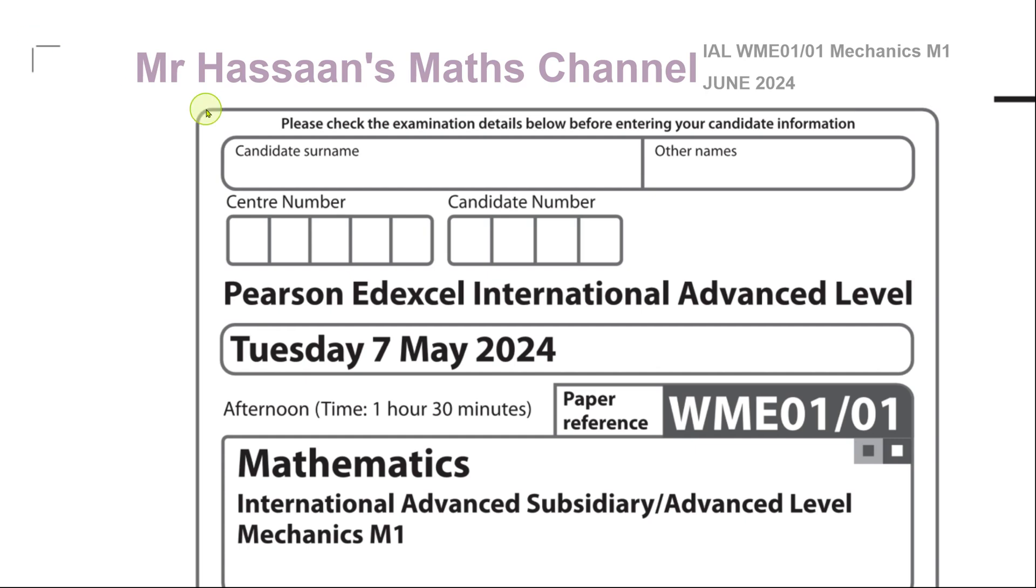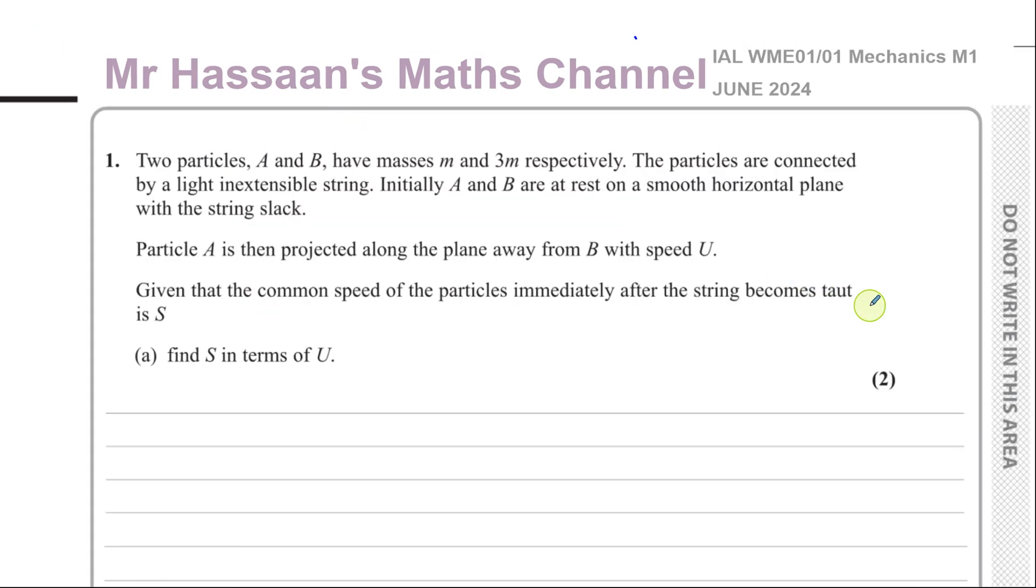So let's start straight away with question number one. You have two particles A and B have masses M and 3M respectively. The particles are connected by a light inextensible string. Initially A and B are at rest on a smooth horizontal plane with the string slack. Particle A is then projected along the plane away from B with speed U. Given that the common speed of the particles immediately after the string becomes taut is S, find S in terms of U.